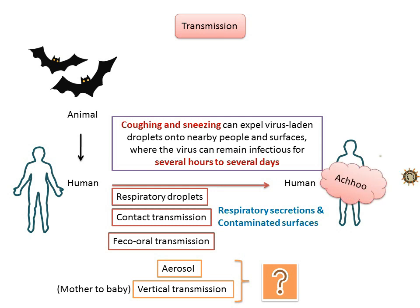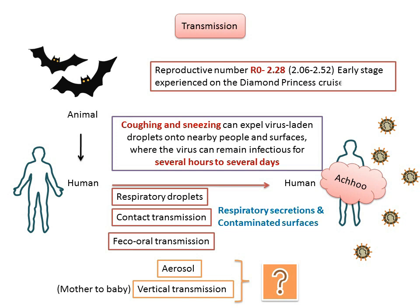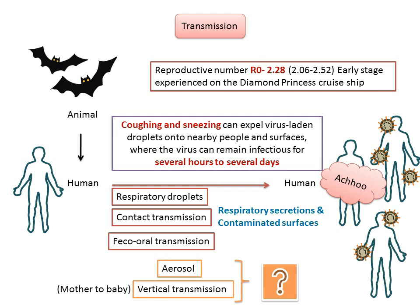The reproductive number of novel coronavirus — according to an article published on 22nd February 2020 by Zhang S. et al. — the R0 number during the early stage experienced on the Diamond Princess cruise ship is about 2.28, with a range of 2.06 to 2.52. That means that from one person, the virus can spread to approximately 2.28 different people. The future daily incidence and probable outbreak size is largely dependent on the change in R0.